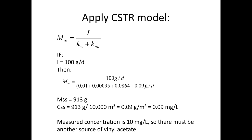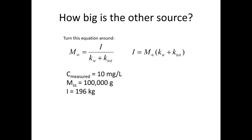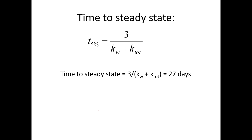With the CSTR model: input is 100 g/day, and the steady-state mass comes out to 913 grams. Dividing by the pond volume gives 0.09 mg/L. But the measured concentration is 10 mg/L — two orders of magnitude higher. So there must be some other source of vinyl acetate; the 100 g/day is not sufficient to explain the measured concentration.